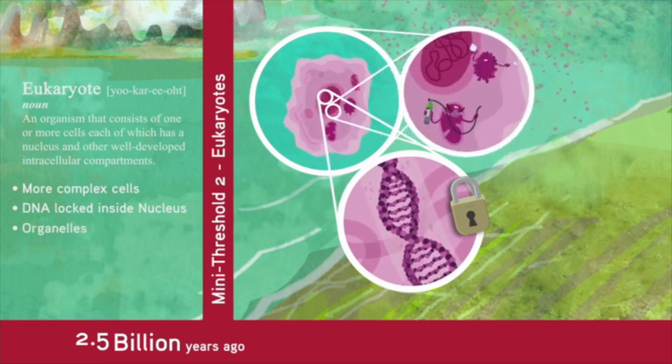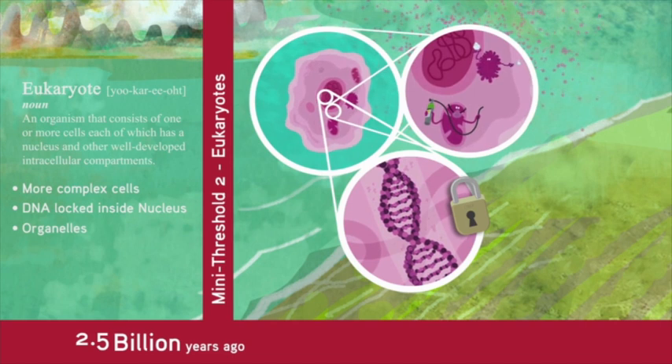Eukaryotes also contain tiny organs called organelles. Like the organs in your body, they perform special functions such as photosynthesis or processing oxygen. This meant that eukaryotes could thrive in Earth's increasingly oxygen-rich atmosphere while many prokaryotes perished. That's a pretty important development since we are made entirely of eukaryotic cells.